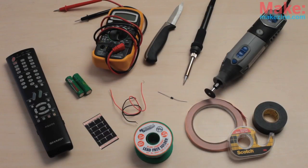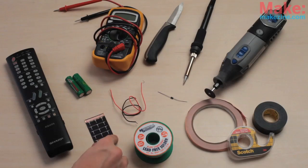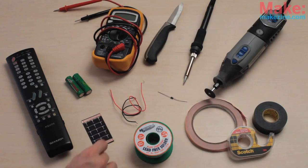Here's what we'll need for this project. Of course, you'll need the remote control that you want to modify, matching nickel metal hydride rechargeable batteries, a flexible solar cell (this one is from Jamco),